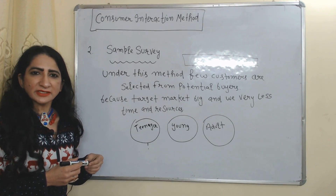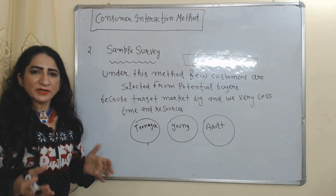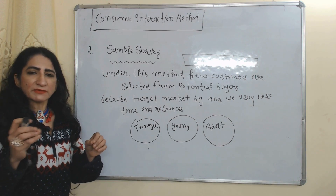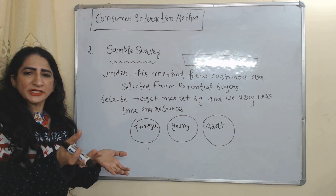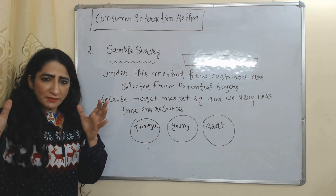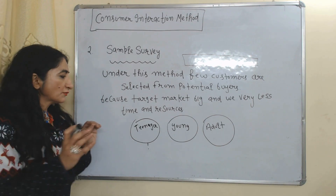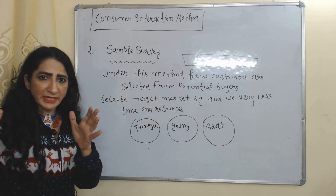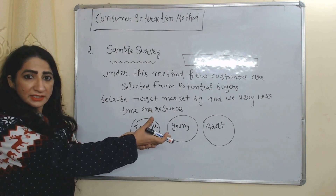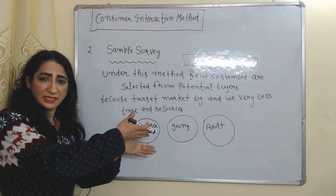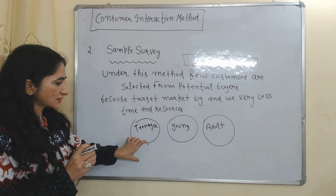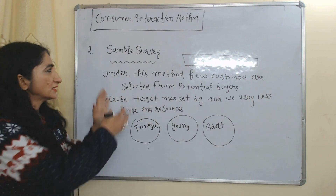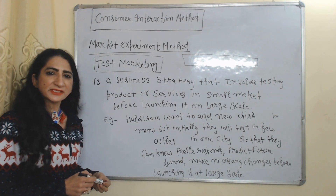The next consumer interaction method is sample survey. Under sample survey, only a few customers are selected from potential buyers because our target audience is very big and we have less time and resources. For example, in the case of a mobile phone, the target market includes teenagers, young adults, and adults. We select some people from each group — this is called sample survey.